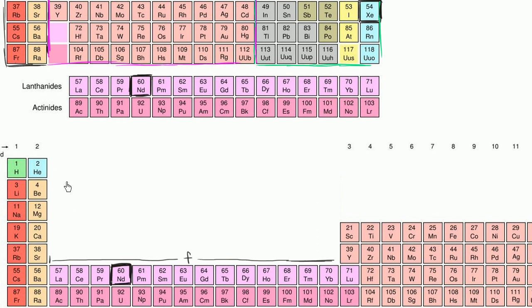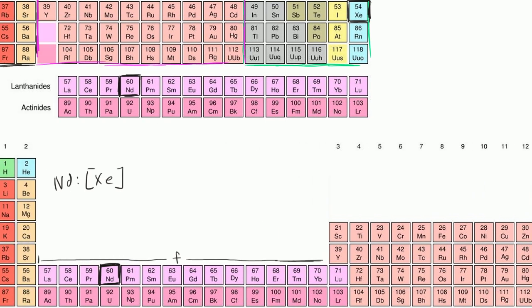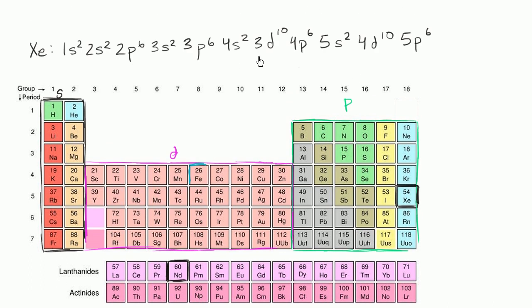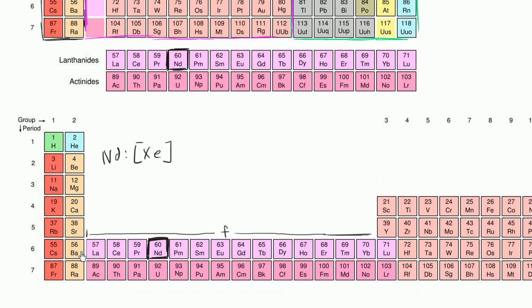So I'm assuming you've had a go at it. So neodymium is going to have the electron configuration of xenon. So xenon gets us right over here. It's the highest atomic number noble gas that has a smaller atomic number than neodymium. And so we can start with that, which we already saw was fairly involved. And then to that, we just add the incremental higher energy electrons.